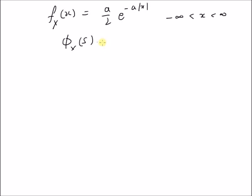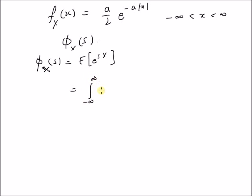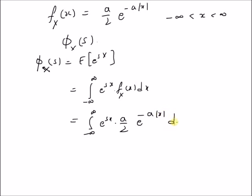That is, φ_x(s). By definition, the moment generating function φ_x(s) is equal to the expectation of e to the power of s times x. Using this definition, we have the integral from minus infinity to plus infinity of e to the power of sx times f_x(x) dx, which equals the integral from minus infinity to plus infinity of e to the power of sx times (a/2) times e to the power of negative a times the modulus of x dx.